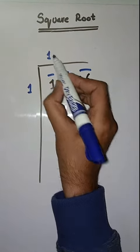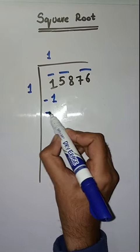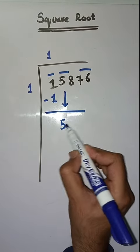So we take a number 1. 1 times 1 is 1. Minus karenge, we pass aayega 0. Next pair is 58, isko hum niche likhenge.